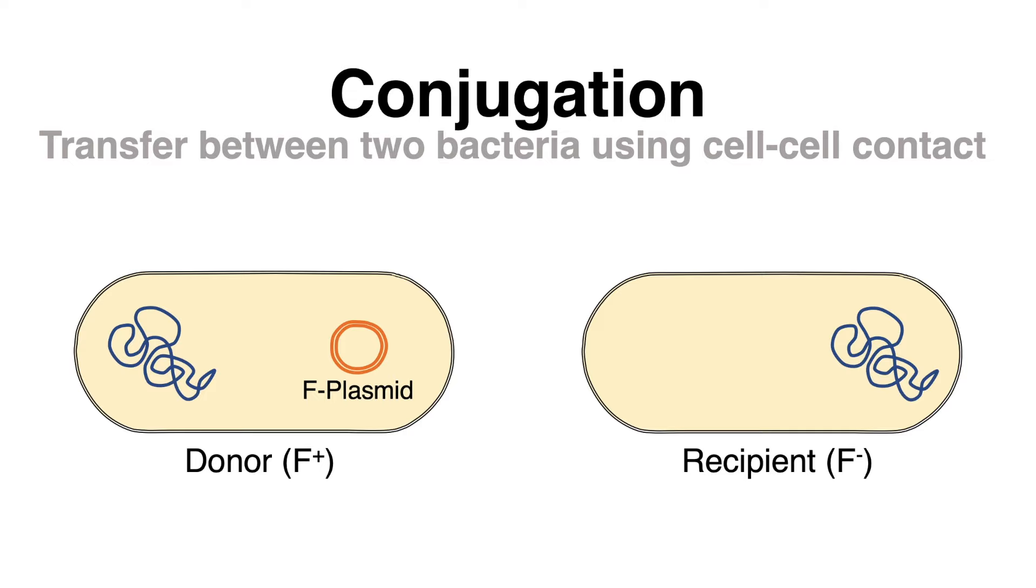F-positive cells are able to form an extending structure, reaching out to neighboring cells. This extension is referred to as the sex pilus.